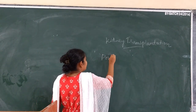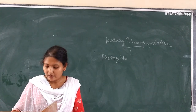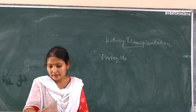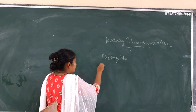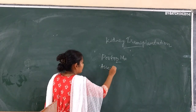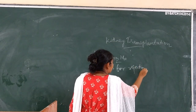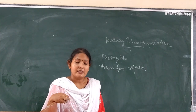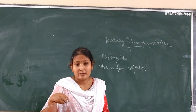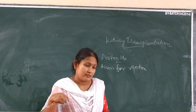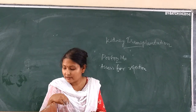Post-operative management has four important points. First, assess for transplant rejection. Rejection can occur within 24 hours, between 3 to 14 days, or even after some years — the transplanted kidney may start to fail. This is a sign of rejection.